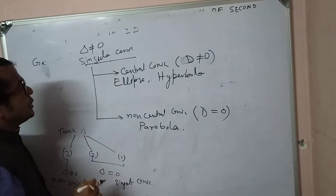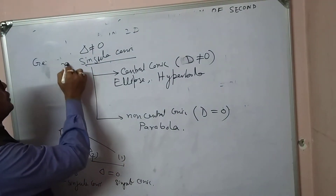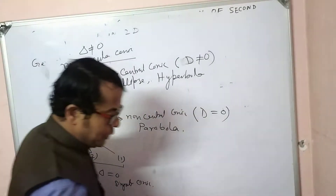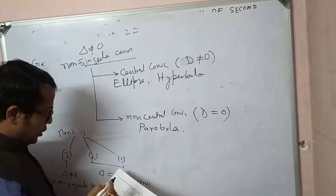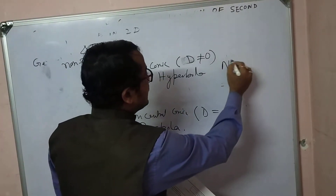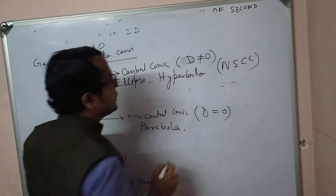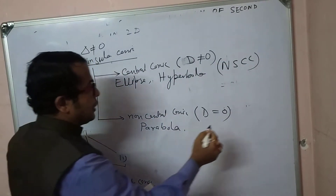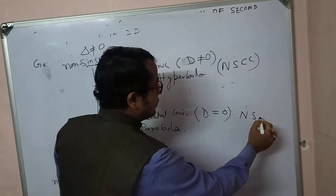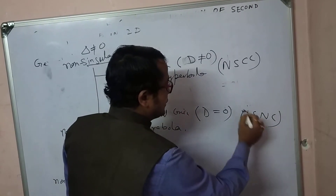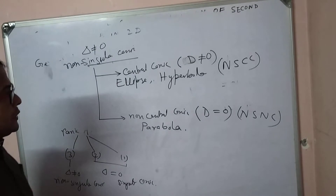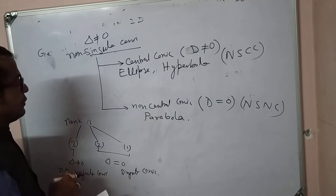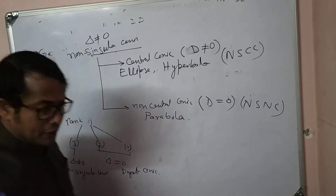We designate the non-singular central conic as NSCC, and the non-singular non-central conic as NSNC.